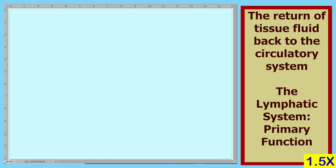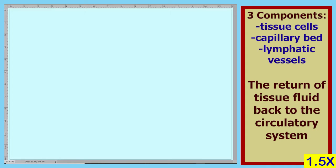The primary function of the lymphatic system is to bring tissue fluid back to the circulatory system. This is the function I'll be explaining today. In order to do this we'll need three components: tissue and tissue cells, a capillary bed which is part of the circulatory system, and the primary component of the lymphatic system — lymphatic vessels.